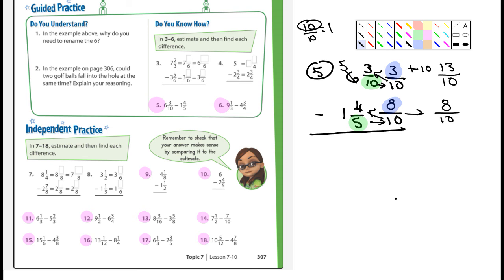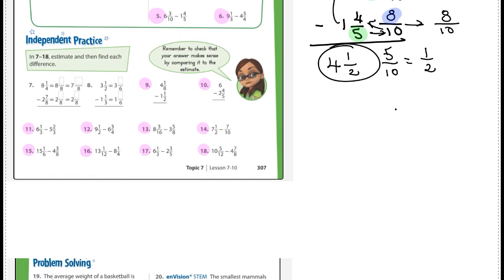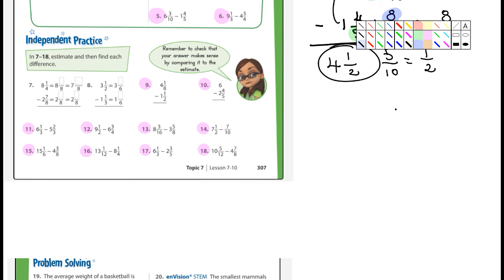All right, I'm going to do one more. I'm going to do number 18. So that's 10 and 5 twelfths, and we're subtracting 4 and 7 eighths. So the denominator — it's not going to be 12 because 8 doesn't go into 12 evenly. So I'm going to pick the largest denominator and double it, see what happens. And that would be 24. So then I ask myself: 12 into 24 — how many times? Twice. Times 5 is 10. And 8 into 24 — three times. Three times 7 is 21.